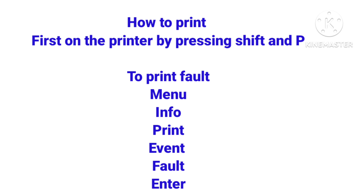To print faults, go to Menu, Info, Print, Event, Fault, then Enter. To print disablements, go to Menu, Info, Print, Event, Disablement, then Enter. To print warnings, go to Menu, Info, Print, Event, Warning, then Enter. To turn off the printer, press Shift and P. Thanks for watching.